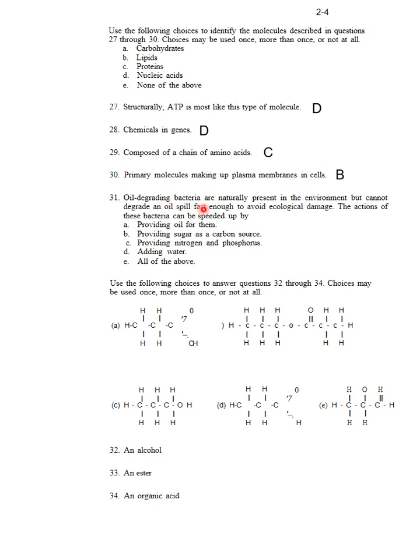Question 31: Oil-degrading bacteria are naturally present in the environment but cannot degrade an oil spill fast enough to avoid ecological damage. The actions of these bacteria can be sped up by providing nutrients to supply nitrogen and phosphorus.